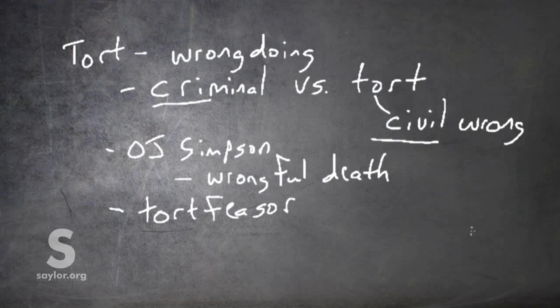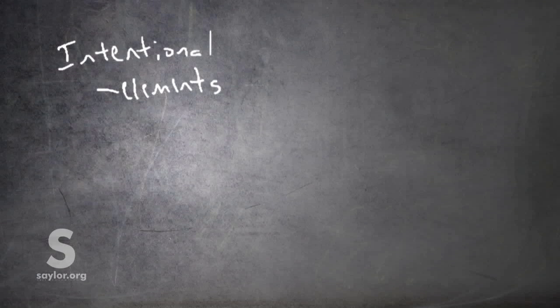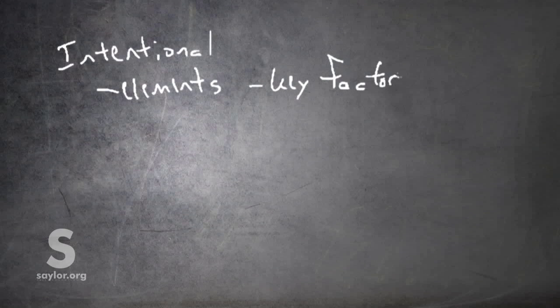Okay, so let's look at those three categories that we've talked about already. And the first of those categories is intentional torts. So, when we look at torts or any other cause of action, in general, we're looking to see what the elements are. What are the elements? And by this, we mean the key factors to prove.